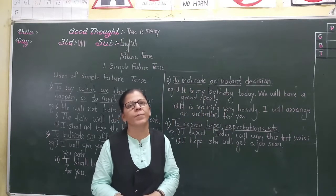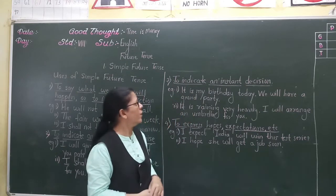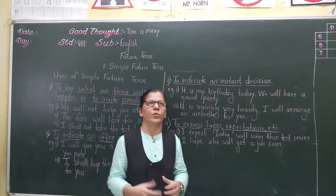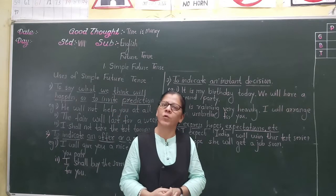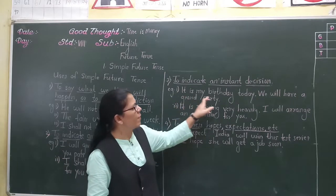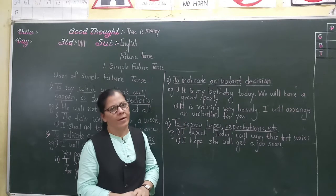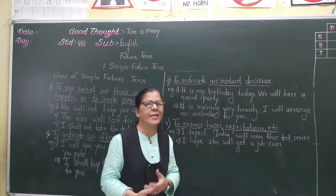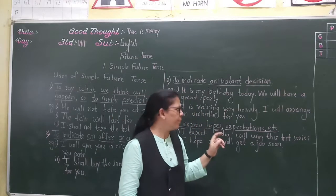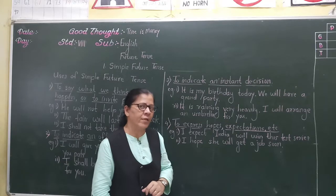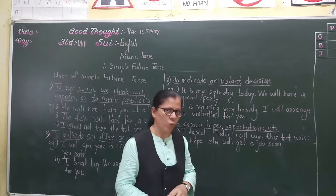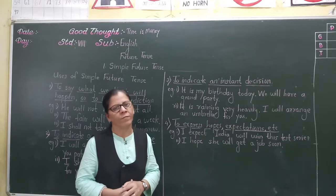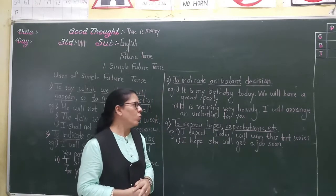The third use is to indicate an instant decision — a quick decision taken at the time of speaking. For example: 'It is my birthday today, we will have a grand party.' Second example: 'It is raining very heavily, I will arrange an umbrella for you.' These are instant decisions taken at the time of speaking, so to indicate that we use simple future tense.